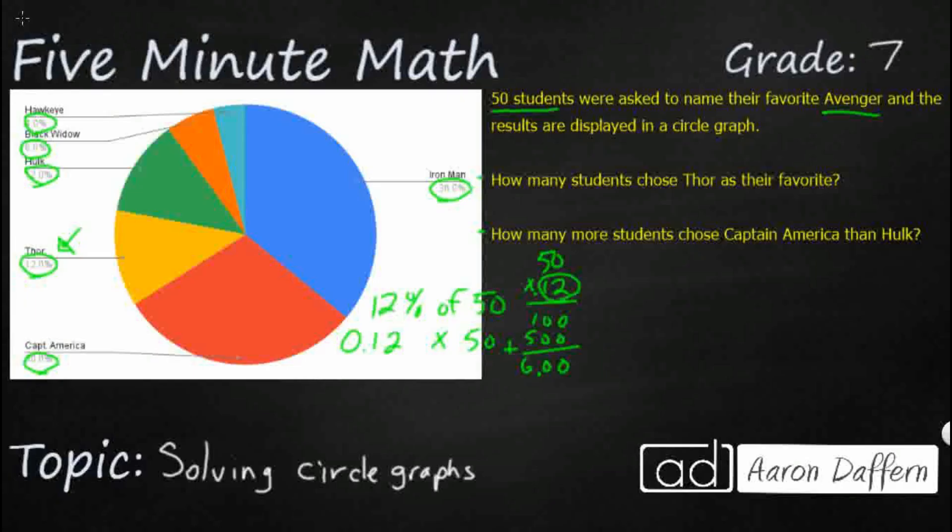6.00, so really just 6. So it looks like there were 6 students, even though 12% seems kind of big. Out of 50, it's only 6 actual students that chose Thor.